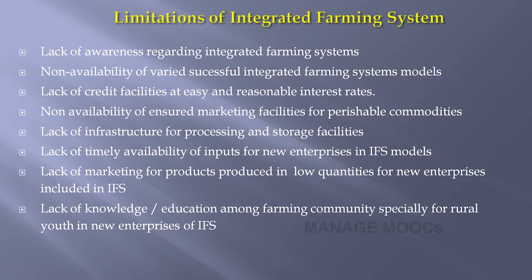There is also a lack of credit facility at easy and reasonable interest rates. To take newer enterprises and combine different enterprises, some capital investment is needed. Then there is non-availability of assured marketing facility for perishable commodities — almost all agricultural and allied sector commodities are perishable, and instant marketing facility is a major prerequisite. There is also lack of infrastructure for processing and storage facility.